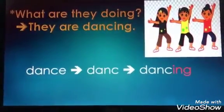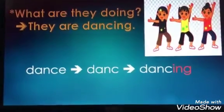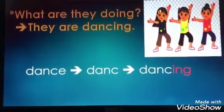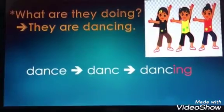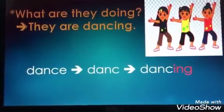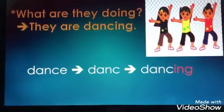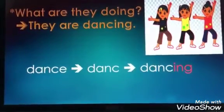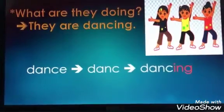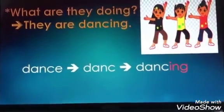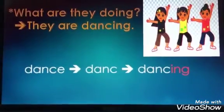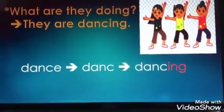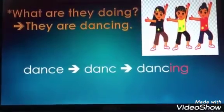Look at this picture. What are these girls doing? They are dancing. Look at the verb 'dance'. I want to put 'ing' to dance. The last letter is 'e', so before adding the 'ing', I should cross the 'e'. Then put 'ing'. Can you tell me another verb that ends in 'e' that I cross before putting 'ing'? Drive, come, dive.